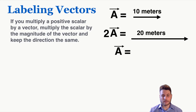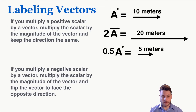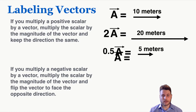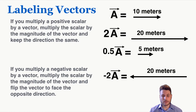If I multiplied the vector by one half, this is what it would look like. If you multiply a negative scalar by a vector, multiply the scalar by the magnitude of the vector and flip the vector to face in the opposite direction. So multiplying by a negative number flips the direction of the vector. Negative 2 times A would be 20 meters to the left.